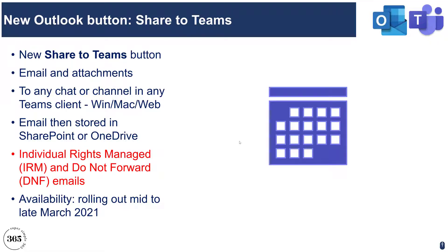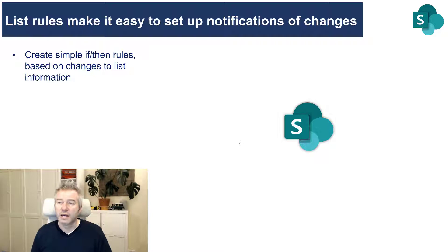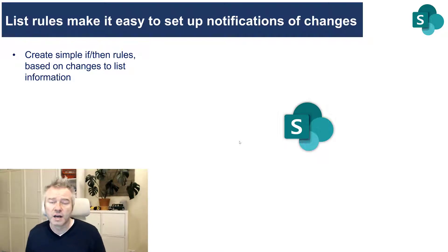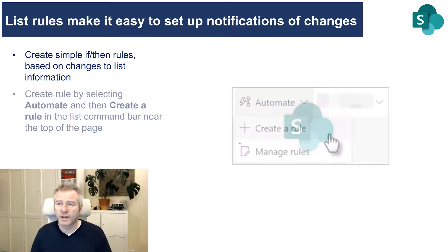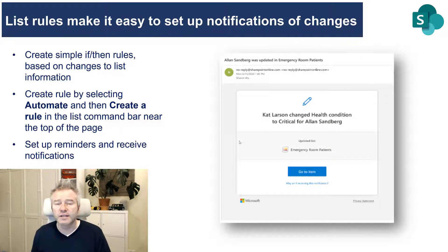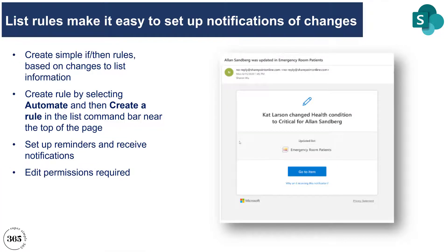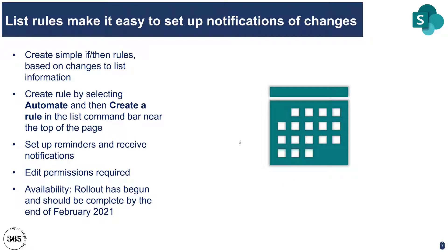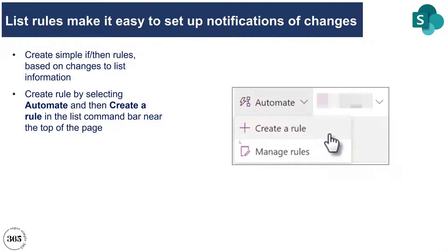List rules are coming to make it easy to get notifications of changes in SharePoint lists. You could use alerts before, but this is a nicer way of doing it. You can create simple if-then rules — go to your list, click Automate, and create a rule to receive notifications when an item you're interested in changes. You need edit permissions to do this. The rollout has begun and should be complete by end of February, so it's worth popping into a SharePoint list now and looking for those buttons at the top.